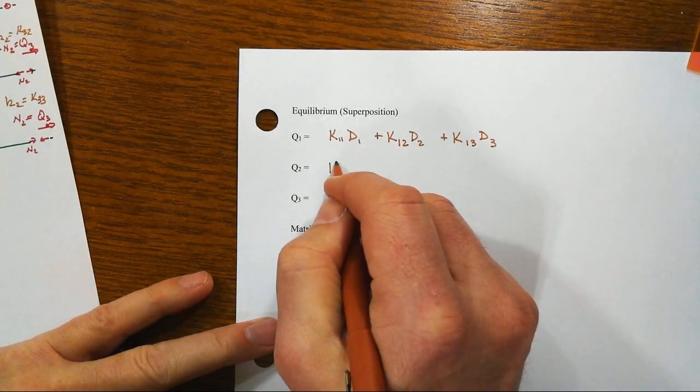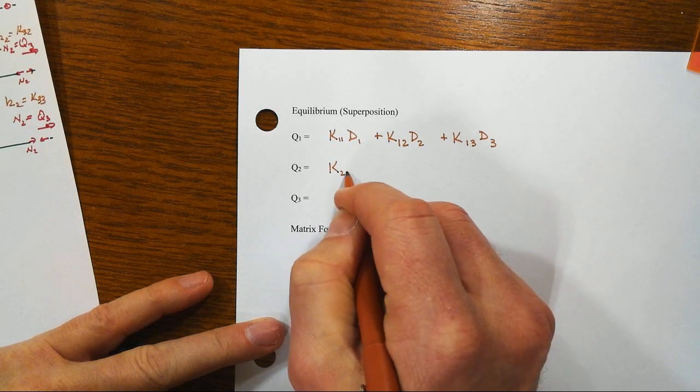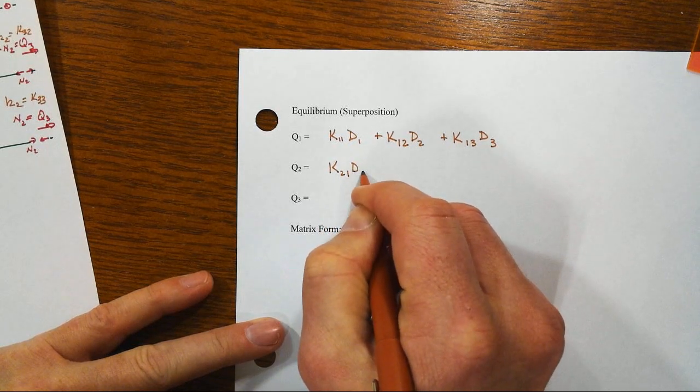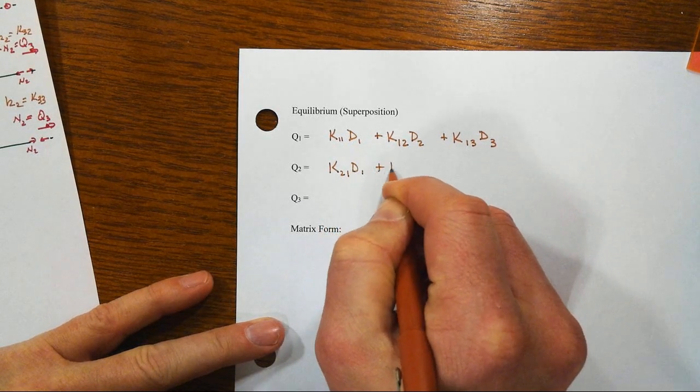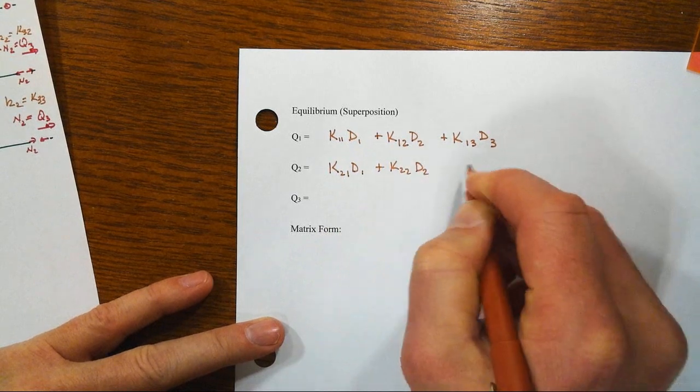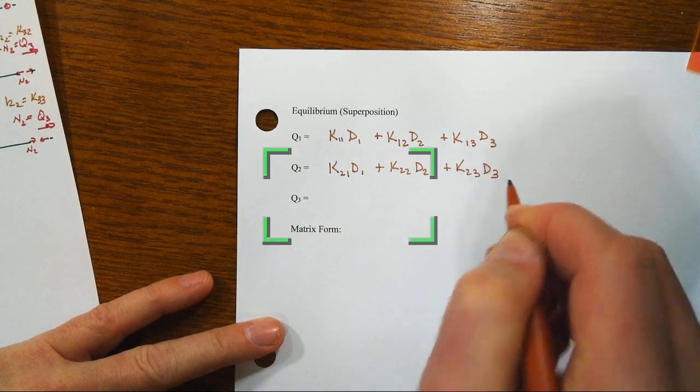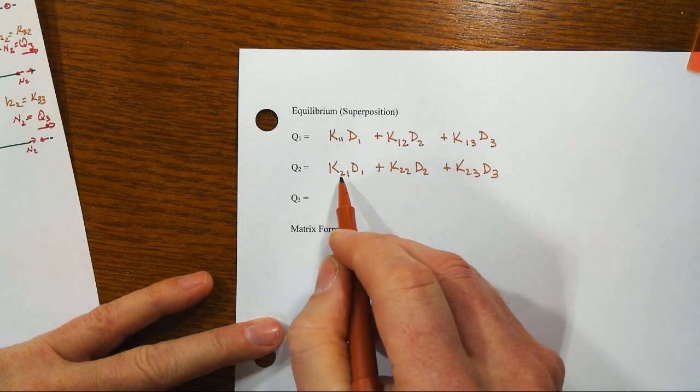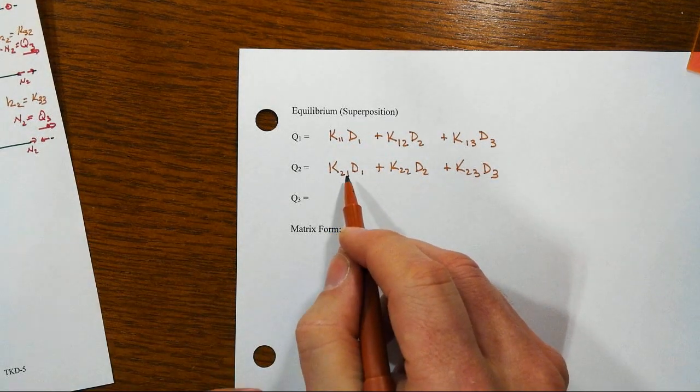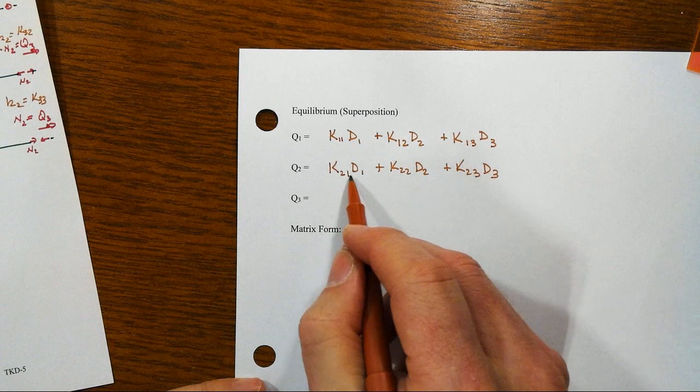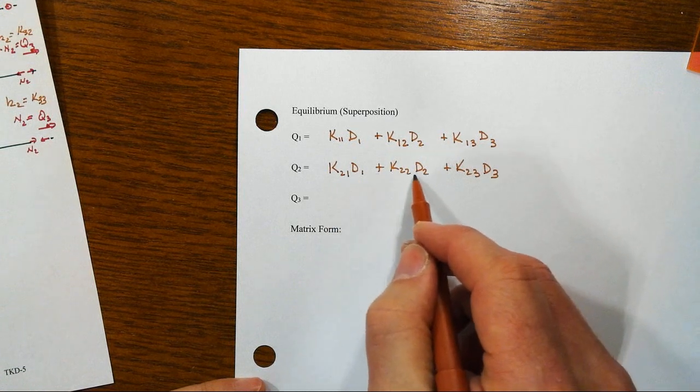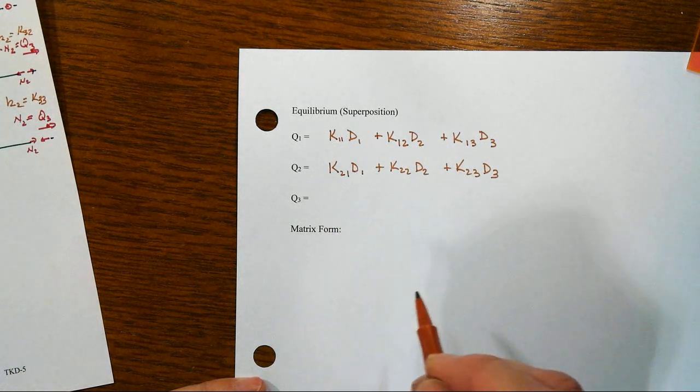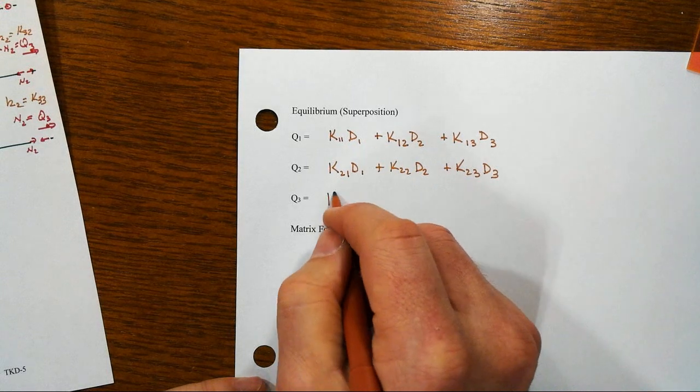Do the same thing at Q2, K21 times D1 plus K22, notice the pattern, times D2 plus K23 times D3. So the first one is at the degree of freedom we're at, and then the second one is then summing through the various combinations of all of them, some of which these might be zero.